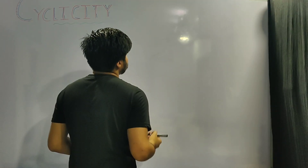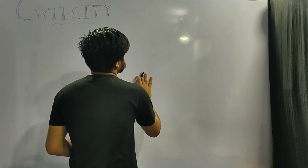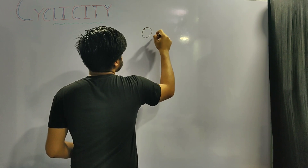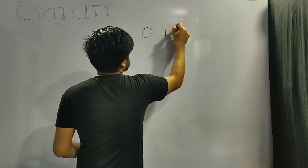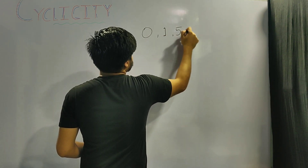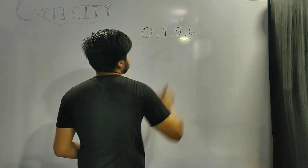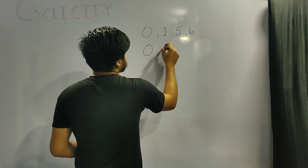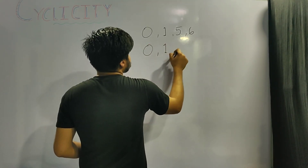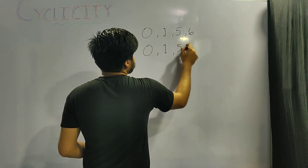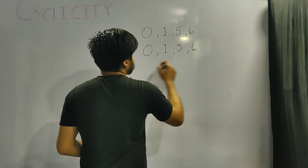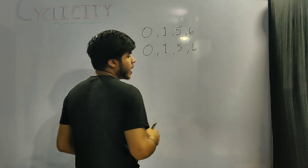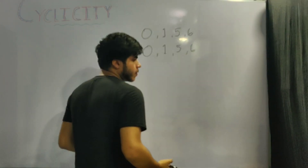Before moving ahead, note this carefully: if a number ends with 0, 1, 5, or 6, it will always end in 0, 1, 5, and 6 respectively, regardless of the power it is raised to.